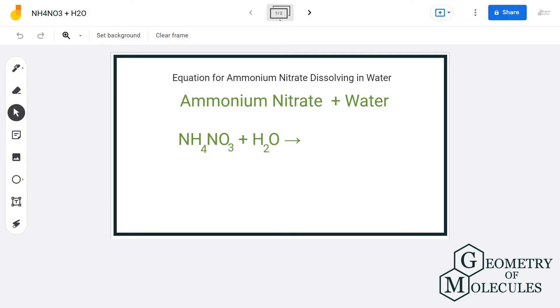Hi guys, welcome back to our channel. In today's video we are going to help you write the equation for this chemical reaction where we have ammonium nitrate dissolving in water. So here is the ammonium nitrate and we have H2O over here. Let's write the states of these molecules. So H2O is in the liquid state, NH4NO3 is in the solid state.